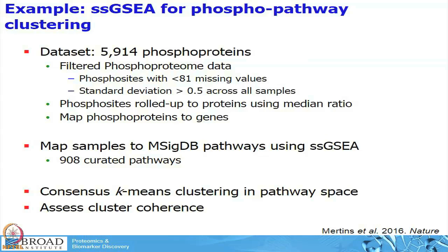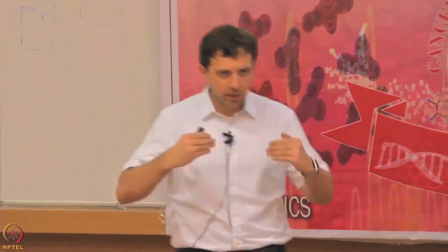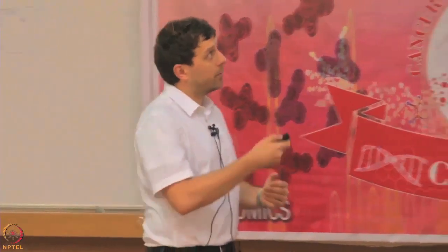We projected those into the space of pathways — 900 pathways — and then performed consensus clustering on this data matrix. Interestingly, we saw a unique cluster which we only observed in pathway space and would not have seen at the phosphosite or phosphoprotein level. This is one example where projecting your data onto a higher level of annotation and performing analysis can give you new insights that you would probably have missed otherwise.